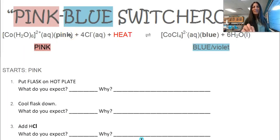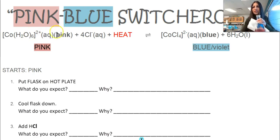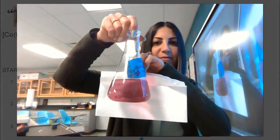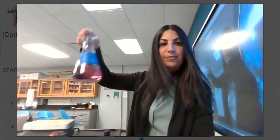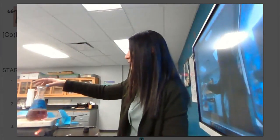I'm going to introduce this popular demo called the Pink-Blue Switcheroo. I have this cobalt-water complex ion — it also has chlorine in it — and you can see it's pink in color right now. I'm going to set this on the hot plate and come back to it and talk about it in just a little bit.